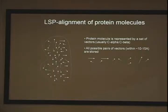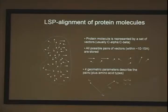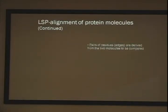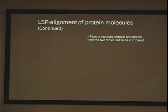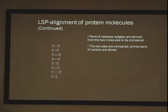We don't want to consider residues sitting on different parts of the molecule, so we use a reasonable distance of about 10 to 15 angstroms. Each pair is described by three distances between the C-alphas and side chains, and one dihedral angle between them. When we want to compare two proteins, we derive these pairs from one protein and from the other, then we compare them.